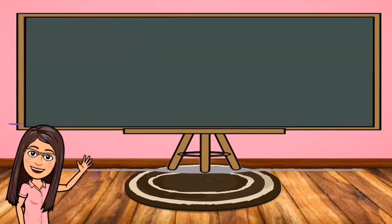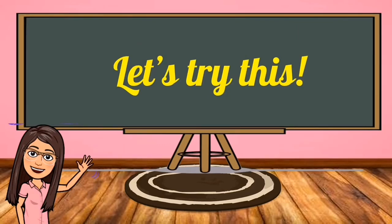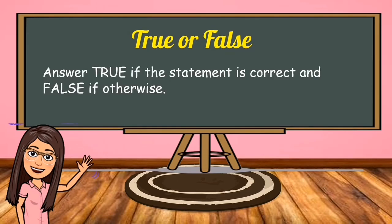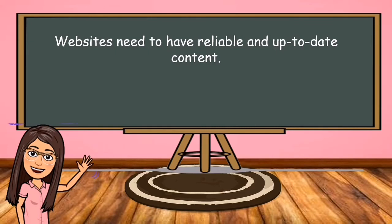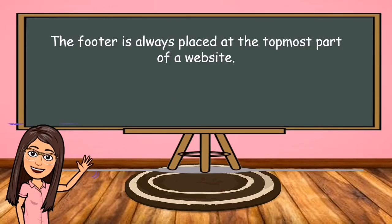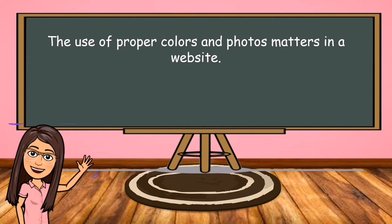Now that you know the different parts of a website and its characteristics, let's try this activity. Get a piece of paper and let's answer. Number 1: Websites need to have reliable and up-to-date content. Next: the footer is always placed at the topmost part of a website — is it true or false? Next: the use of proper colors and photos matters in a website — true or false? And the correct answer here is true.